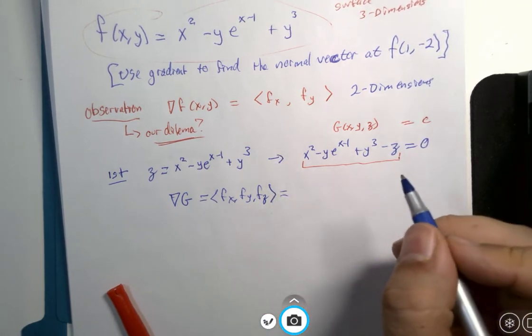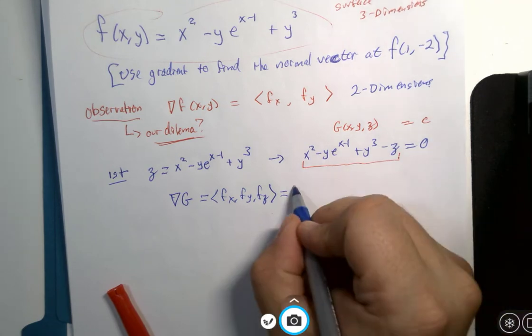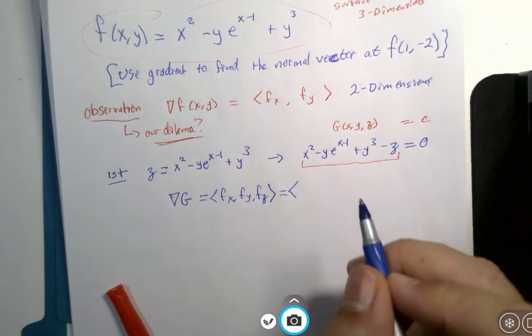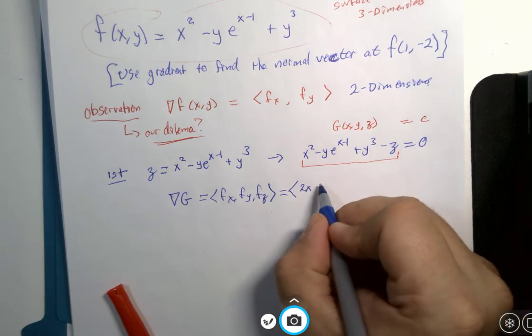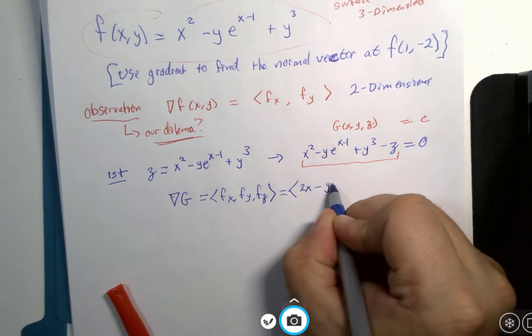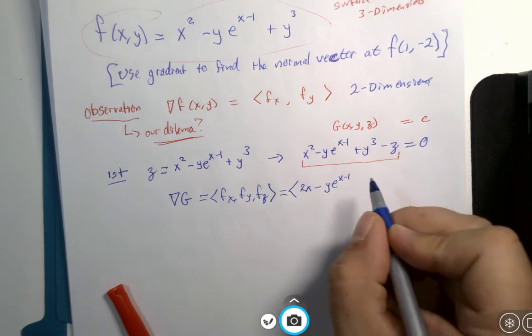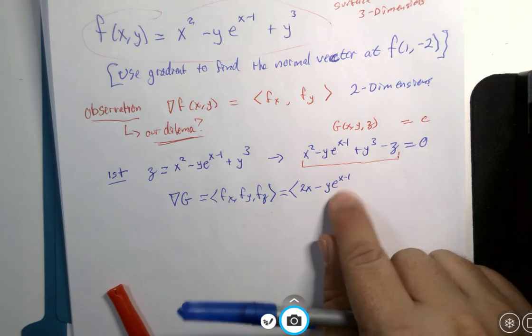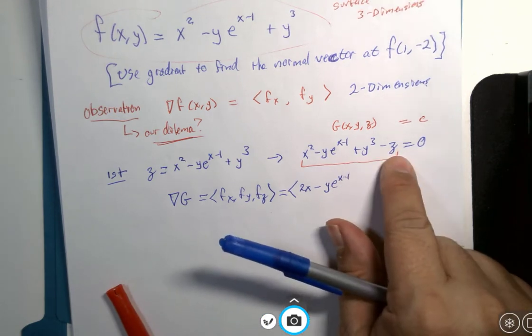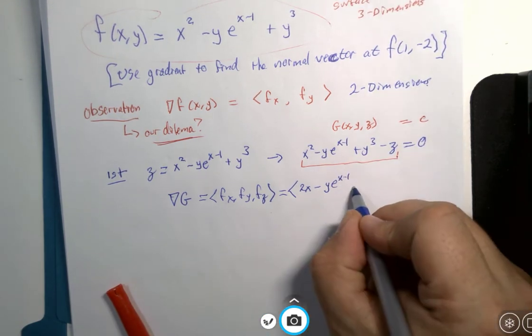Let's see, that shouldn't be too difficult to calculate. Derivative with respect to x, that would be 2x minus y e to the x minus 1. The derivative of x minus 1 is just 1, so that doesn't change. And then those are both 0 if x is the variable. There's your first term.